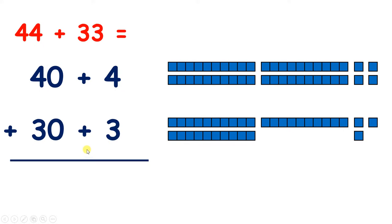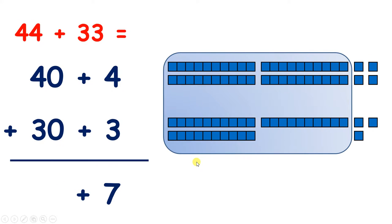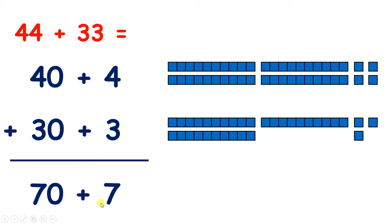So we want to add 40 plus 4 and 30 plus 3. If we start with the units, we can see that 4 plus 3 is 7, so we have 7 units. And we can write a plus here, because we're going to add tens to our units. Looking at the tens, we have 4 tens plus 3 tens, or 40 plus 30, so we have 7 tens altogether, or 70. So now we have 70 plus 7, which gives us 77.